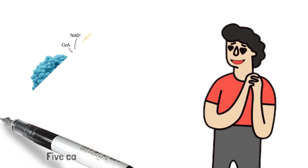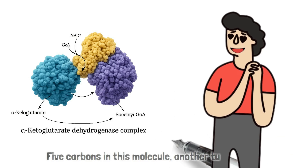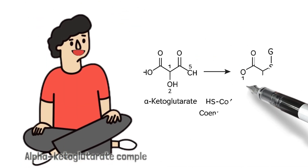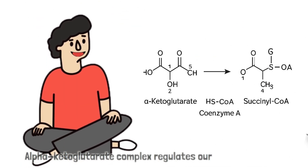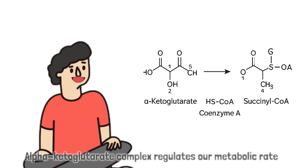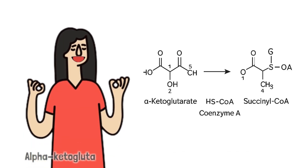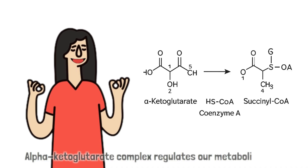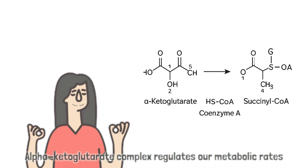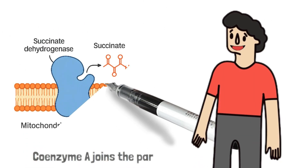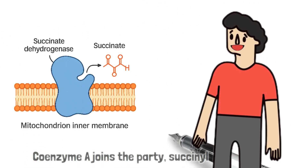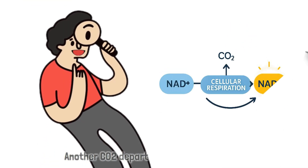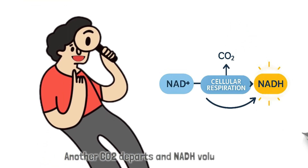Five carbons in this molecule, another turn awaits. Alpha-ketoglutarate dehydrogenase complex regulates the rate. CoA joins the party, succinyl-CoA appears. Another CO2 departs, and NADH volunteers.